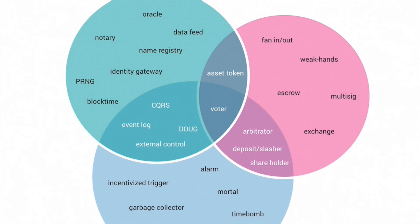The blue circle is related to triggers and actions — alarm implementations, how something gets frequently called, external control and handing control to another device, triggering events, enterprise triggers, garbage collection, and also terminating contracts. Those are the three rough areas.